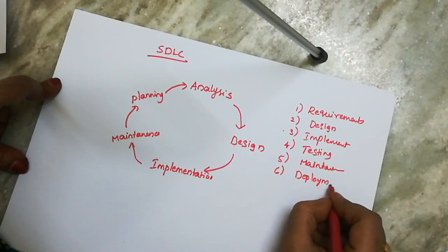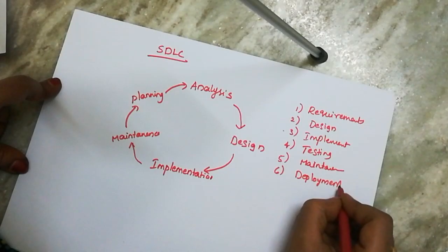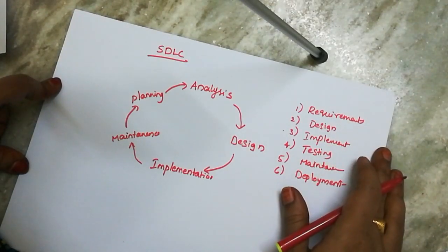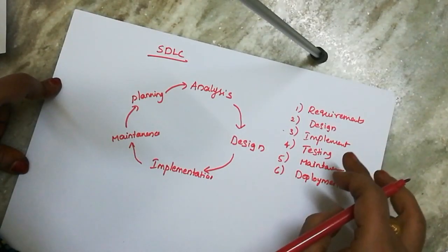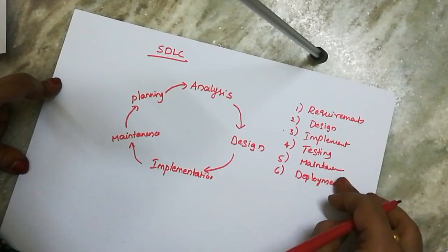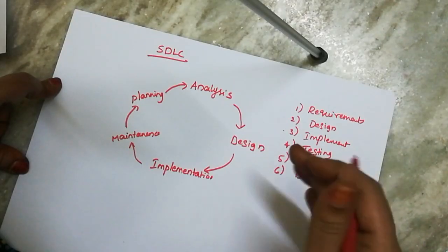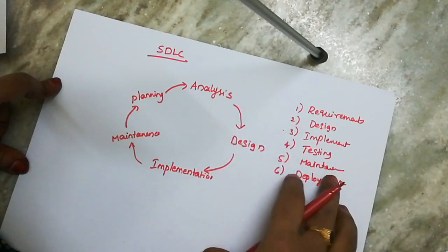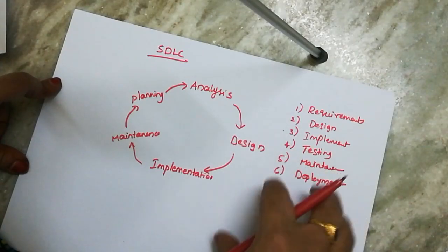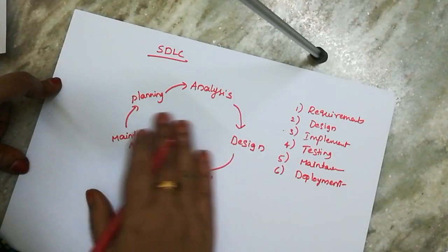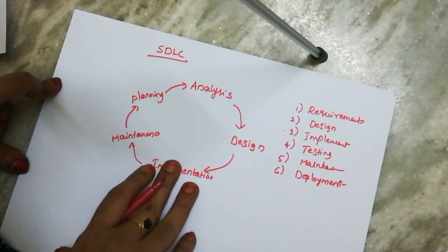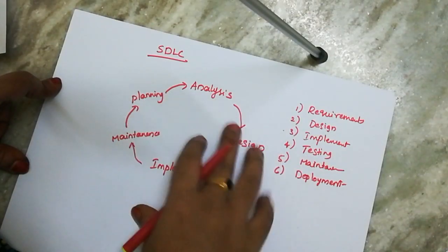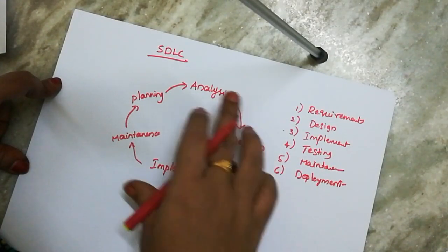So the actual SDLC stages in depth: the requirement stage is the first stage, then design stage, implementation, testing, maintenance, and deployment.